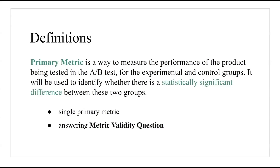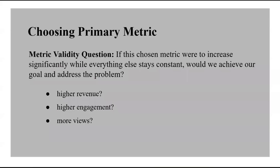One way to test the accuracy of your chosen primary metric is to ask what I call the metric validity question: if the chosen metric were to increase significantly while everything else stays constant, would we achieve our goal and address our business problem? Is it higher revenue, higher customer engagement, or high views we are chasing? Though you need a single primary metric for your A-B test, you still need to monitor remaining metrics to make sure all metrics show change. Having multiple primary metrics in an A-B test will lead to false positives — detecting many significant differences while there is no effect — so always pick a single primary metric but keep an eye on the rest.